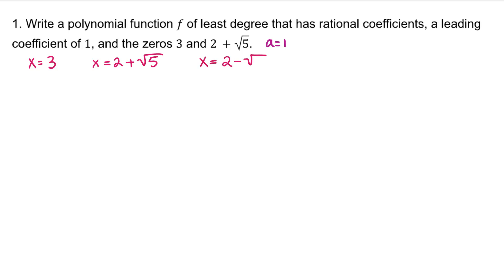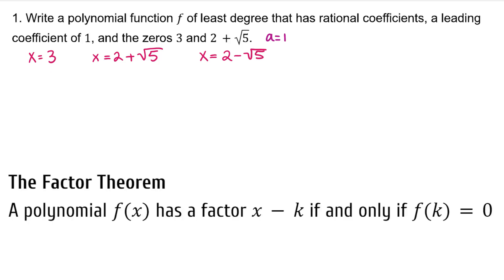The factor theorem states a polynomial f of x has a factor x minus k, if and only if f of k equals 0. Each of these zeros is a value of k, making their corresponding factors x minus k.